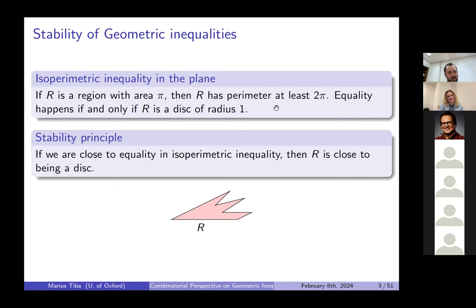I want to discuss an equivalent form of the isoperimetric inequality: if I is a region of area π, then I has perimeter at least 2π, with equality if and only if I is a disk of radius 1.